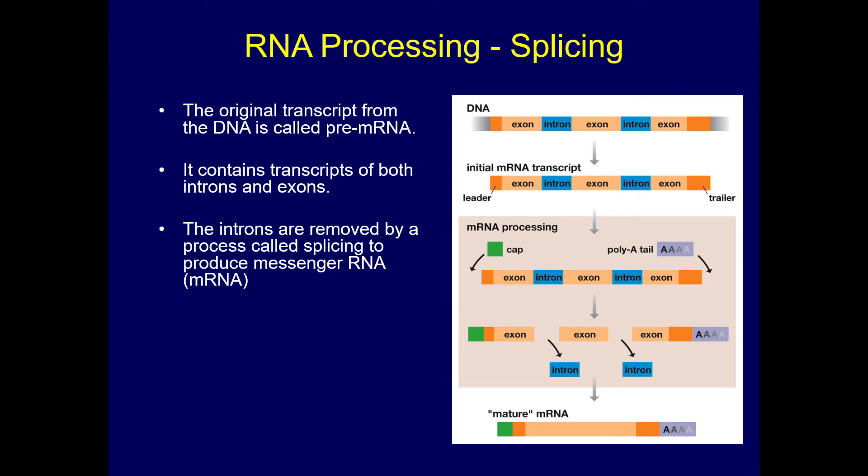There's more processing that needs to be done. The original transcript from DNA is called a pre-mRNA, and it contains introns and exons. Introns are extra sequences that don't need to be there, so the introns have to be removed before the RNA can be used to make a protein.